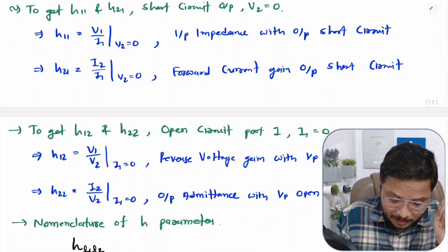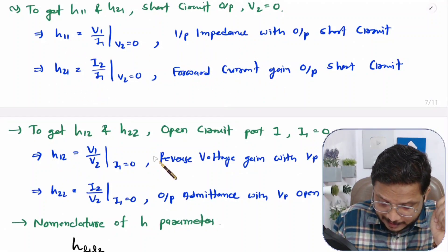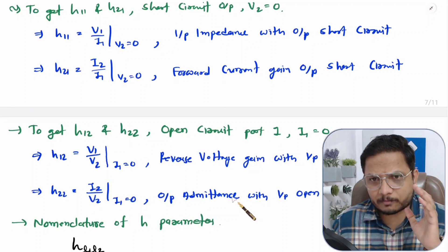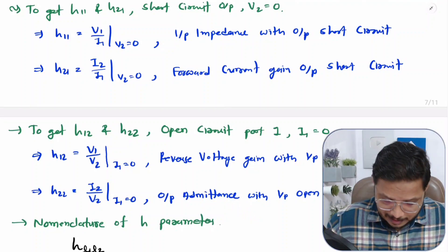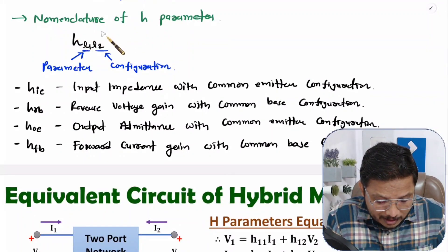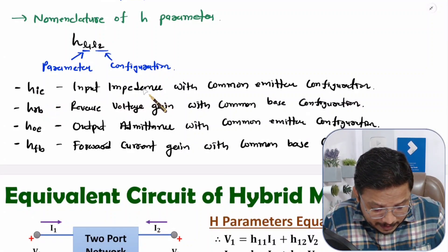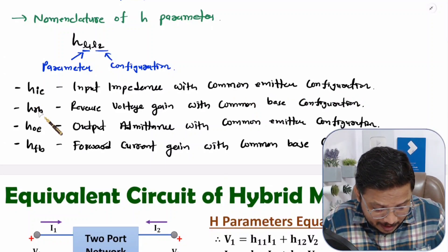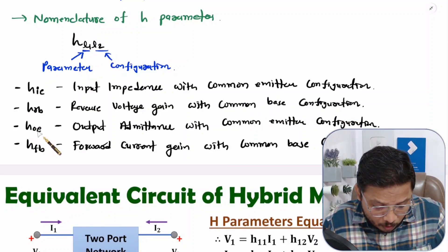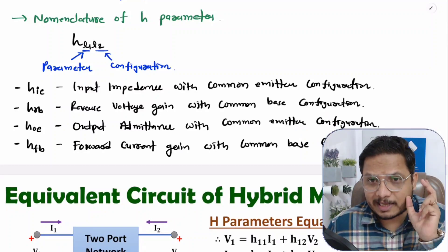H11 is input impedance, H21 is forward current gain, H12 is reverse voltage gain, and H22 is output admittance. I also explained the proper nomenclature. In an examination, they may ask questions based on nomenclature — for example, HIE, where HI means input impedance and E means common emitter configuration. HRB means reverse voltage gain in common base configuration. HOE means output admittance in common emitter configuration.